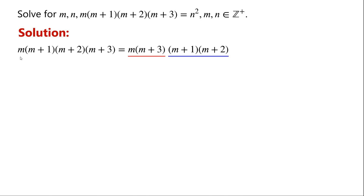Now we look at the left-hand side of the equation. By rearranging, we can write it as m times (n+3) times (n+1) times (n+2). m times (n+3) is equal to m squared plus 3m.